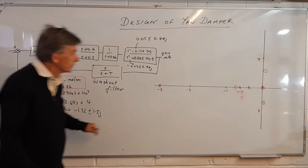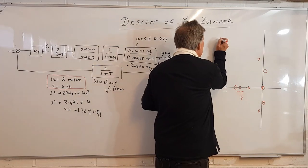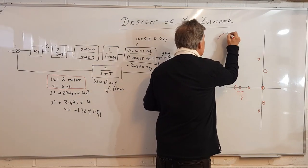And we now plot the point minus 1.32 plus 1.5j in the diagram as well. So minus 1.32, we've got it down here somewhere 1.5, so that gives us this point here. That's our design point.